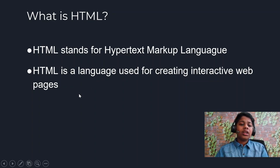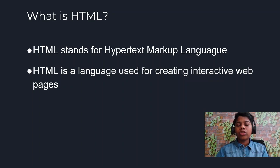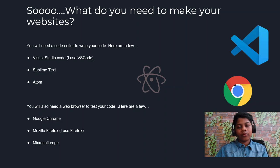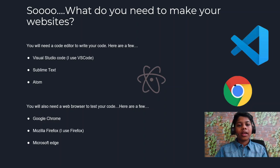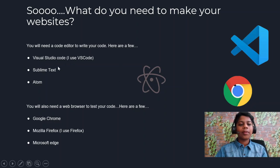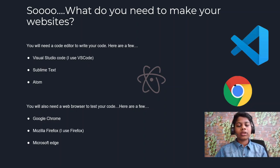You can understand it like this: it's a language used to create interactive web pages, so we can create websites however we want them to look. Now, what do you need to make your websites? You need a PC and a few applications. The first one is a code editor, where you write your code and test it. I recommend any one of these three: Visual Studio Code, Sublime Text, or Atom. All these are free — well, Sublime Text is not free, you have to pay, but they have a trial. VS Code is what I'm using.